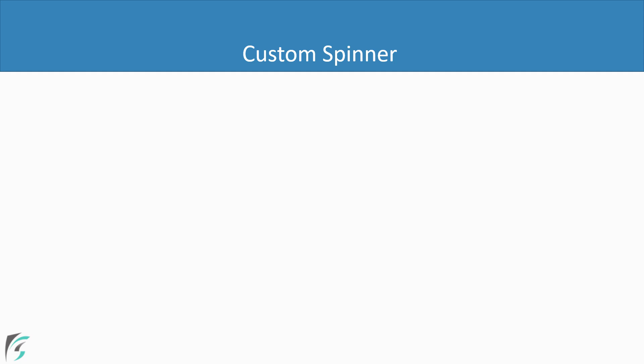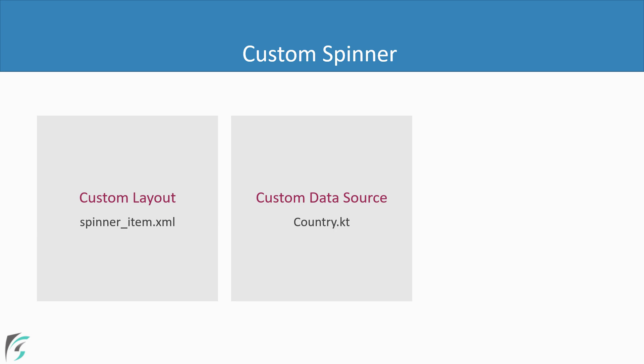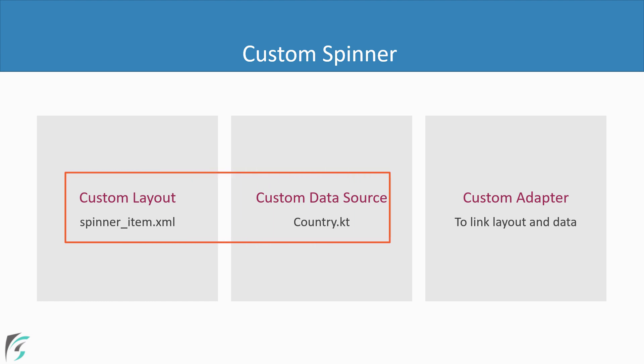To implement the custom spinner, we would need a custom layout — this layout will give a new appearance to the spinner which we saw initially in the video. We also need a dedicated data source which will provide us with a list of objects. Each object will contain a reference to a country image and its name. And finally, we need a custom adapter which will combine our layout with our data and then display it to the user.